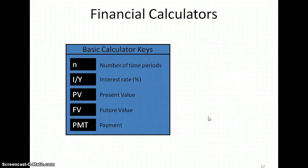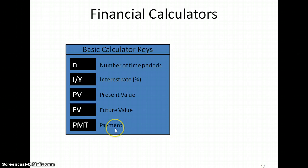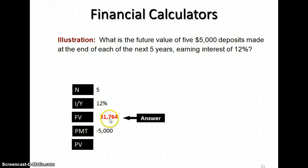Finally, let's solve this using a financial calculator. N, the number of periods, is 5. The interest rate is 12%. We are solving for the future value. Our payment is going to be negative $5,000 — if you think about a payment, that is an outflow. So with negative $5,000 as the payment, we solve for the future value and get $31,764. That's our answer.